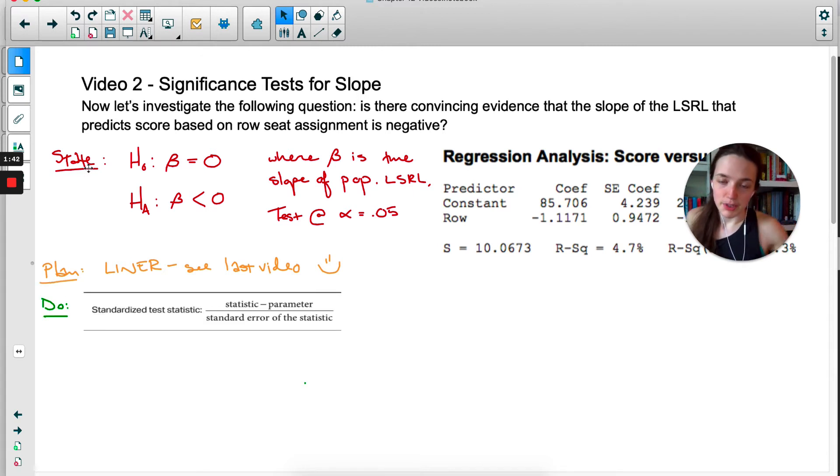For the do step, here's the generic standardized test statistic formula from the formula sheet. Like I said in the last video, we're always using t when we're dealing with inference for slope, so we're finding a t-score here. Our statistic was the negative 1.1171. Parameter is zero.